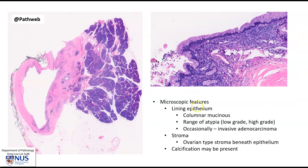Microscopically, the lining epithelium is columnar and mucinous, and there can be a range of dysplasia from low to high-grade and occasionally invasive adenocarcinoma. The stroma shows this characteristic cellular spindle cell ovarian-type stroma beneath the epithelium, and sometimes calcifications can be present.